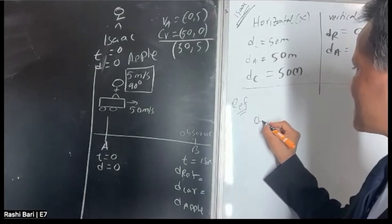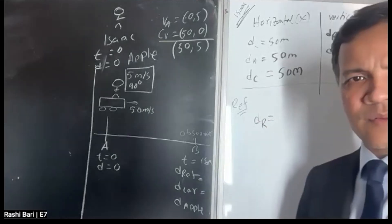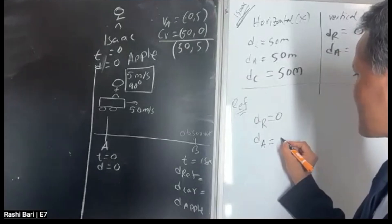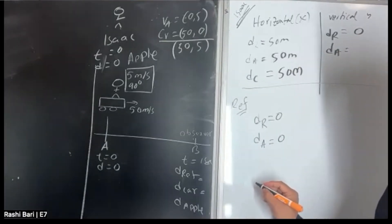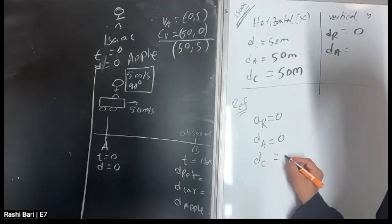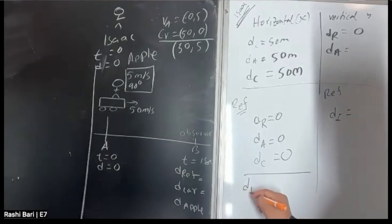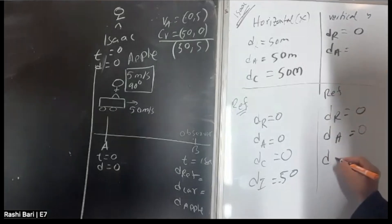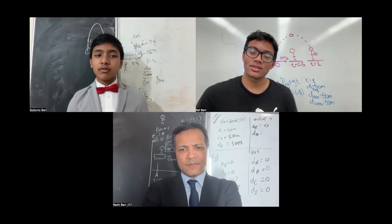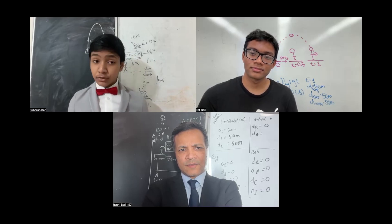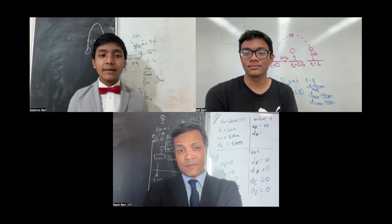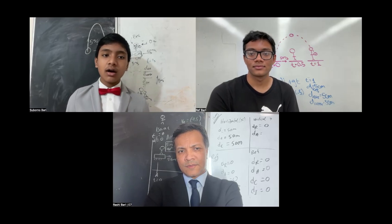At ref's reference frame, what is the displacement of ref? It's always zero when you're in your own reference frame. What is the displacement of the apple? It comes back to you — so it's zero. What is the displacement of the car? It's also zero because you're always standing on it in the same place. Displacement of Isaac is negative 50. Displacement of apple? Zero. Displacement of car? Zero. And displacement of Isaac? Zero. If you're in Isaac's reference frame, the correct answer is that ref is moving. If you're in ref's reference frame, the correct answer is that Isaac is moving. The answer depends on what reference frame you're in, because there is no absolute reference frame to tell whether something is moving or not.